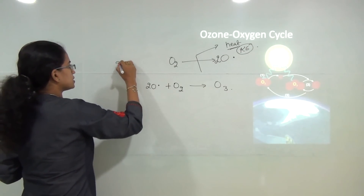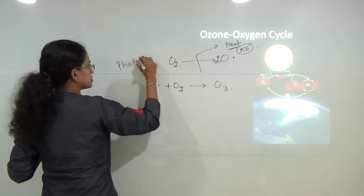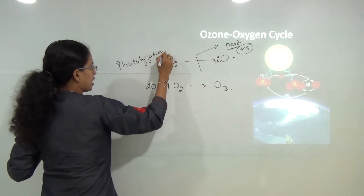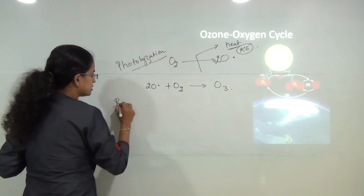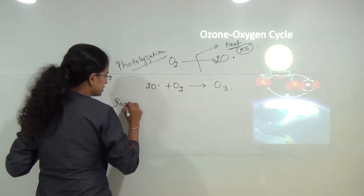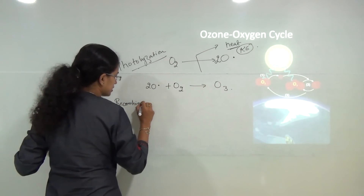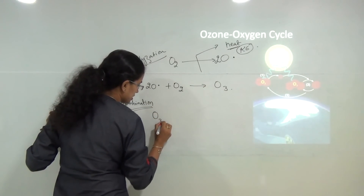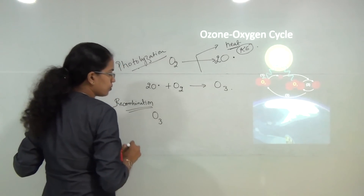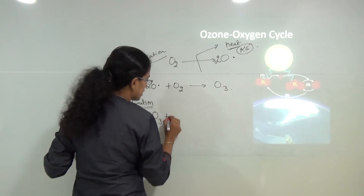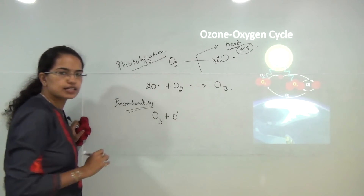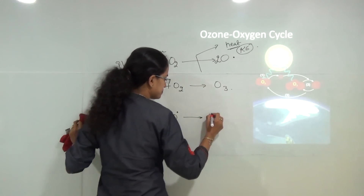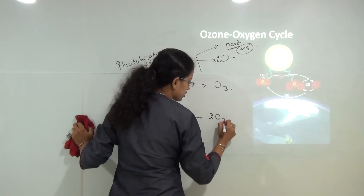We call this process photolyzation. However, there is also a recombination method. In recombination, the ozone once formed again reacts with free radicals of oxygen to form two molecules of oxygen.